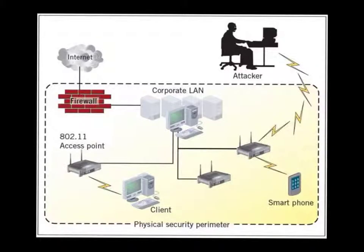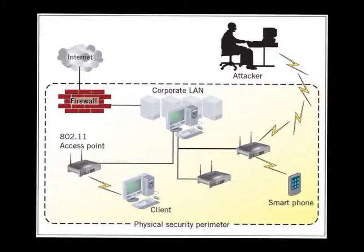This more complex network diagram shows a corporate network. Starting at the internet, this network is protected by a firewall, which says yes or no to let certain data in. Inside is the IT server room, which could house a print server, an email server, and a file server. These servers are then connected to wireless access points throughout the building, and devices connect wirelessly to those access points, which in turn connect back to the servers.